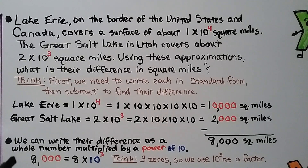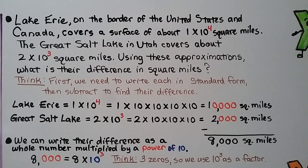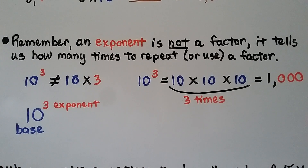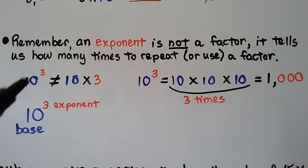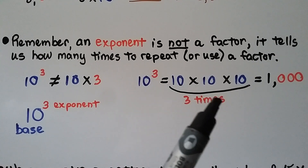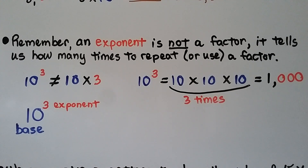We can write their difference as a whole number multiplied by a power of 10. 8,000 has 3 zeros, so we use the whole number 8 times 10 to the 3rd power. Remember: an exponent is not a factor. It tells us how many times to repeat or use a factor. So 10 to the 3rd power does not equal 10 times 3 — we're not multiplying those two together. The 3 tells us how many tens to multiply: 10 times 10 times 10, which equals 1,000.